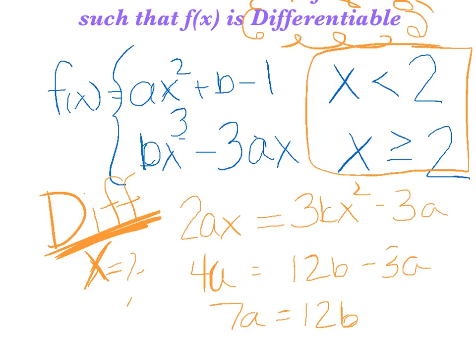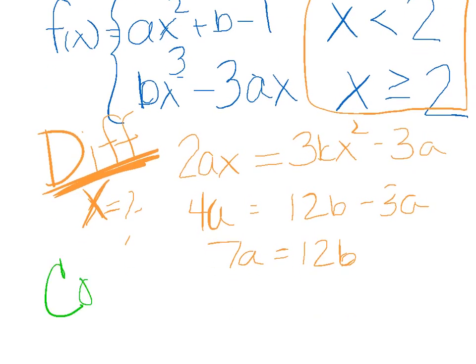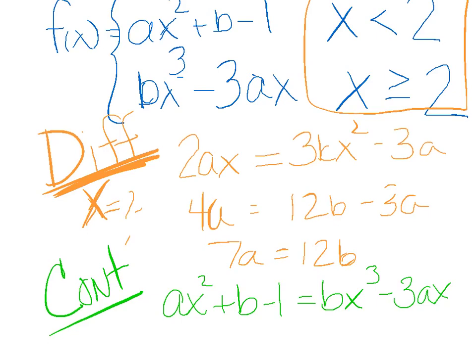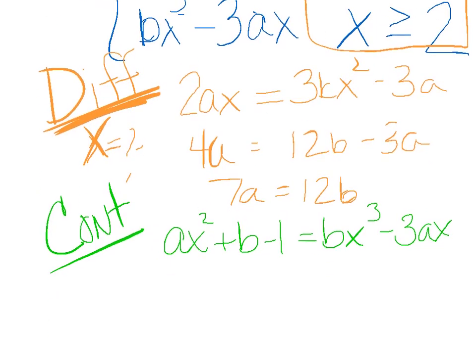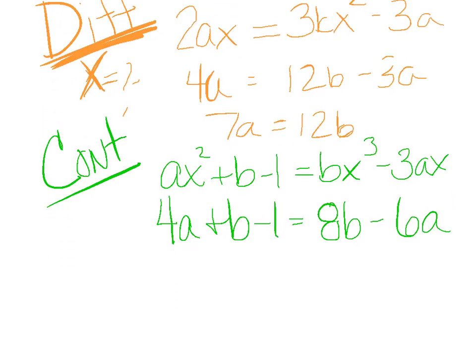Now I'm not even close to being done. All I took care of is differentiable. But remember, differentiable obviously means derivative, but it also implies continuous. So now let's take care of the word continuous. And continuous just means the left side equals the right side. So I'm going to set my ax² plus b minus 1 equal to bx³ minus 3ax. And again, all of this is true when the x value is 2. So I should get 4a plus b minus 1. 2³ is 8, so that's 8b minus 6a. And again, I'm just going to put the a's and b's on the same side. So I get 10a minus 1 equals 7b.